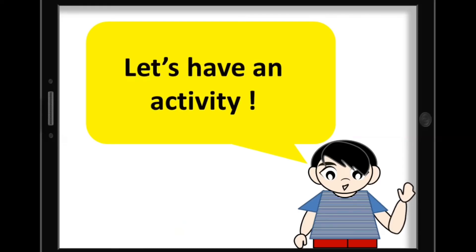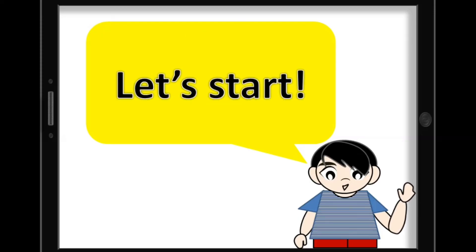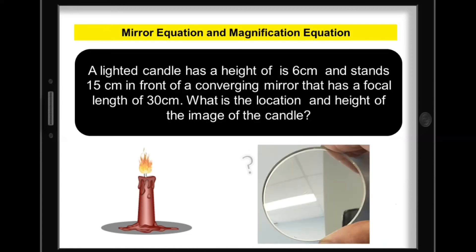Let's have an activity. Using the mirror equation and magnification equation, describe the image formed by a curved mirror. A lighted candle has a height of 6 cm and stands 15 cm in front of a converging mirror that has a focal length of 30 cm. What is the location and height of the image of the candle? You may pause this video as you answer.